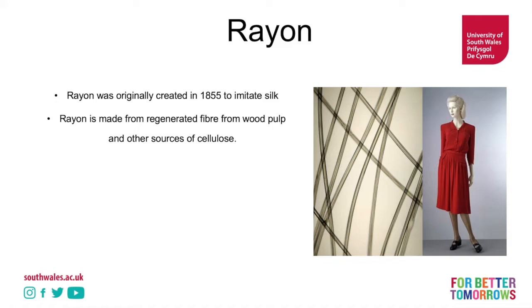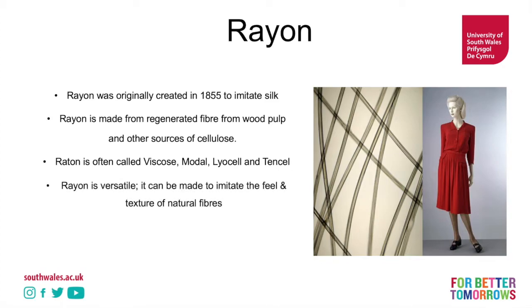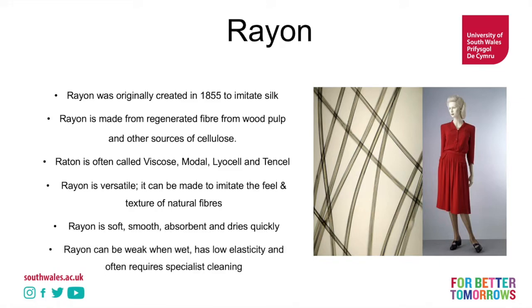Rayon is made from regenerated fiber from wood pulp and other sources of cellulose, sometimes cotton trash and other vegetable-based waste materials. Rayon is often called viscose, modal, lyocell, or Tencel. It's versatile and can be made to imitate the feel and texture of natural fibers such as silk. Rayon is soft, smooth, and absorbent, and dries very quickly. It can be weak when wet, has low elasticity, and often requires specialist cleaning.